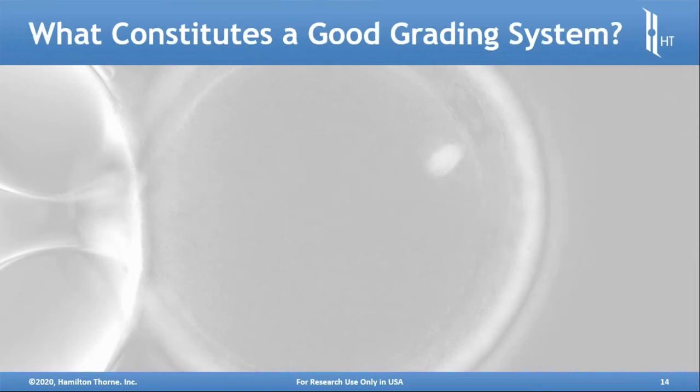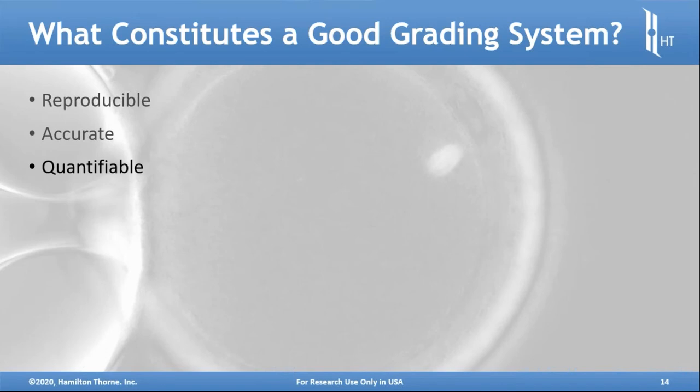What would constitute a good grading system when looking at an oocyte or cohort of oocytes? The results, based on whatever criteria are determined viable, have to be reproducible, accurate, and quantifiable. They have to be sensitive enough to identify differences in viability, even if those differences are small.